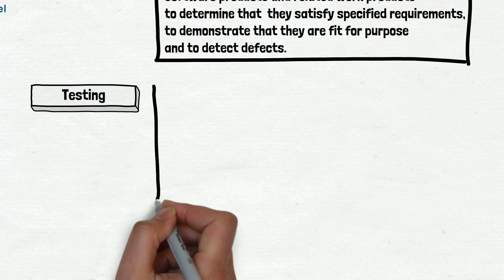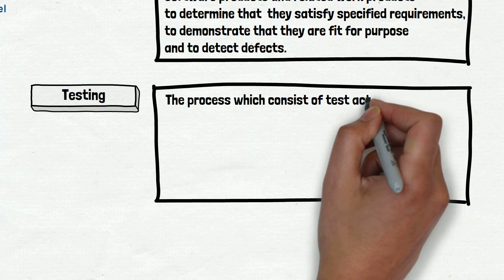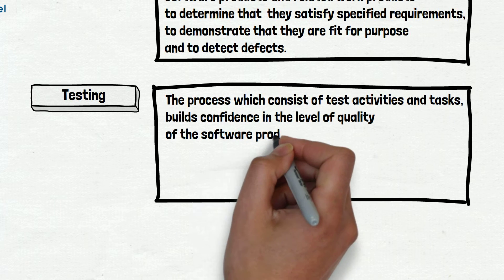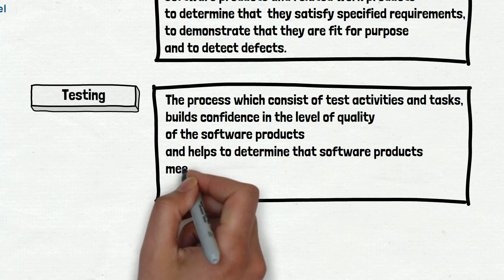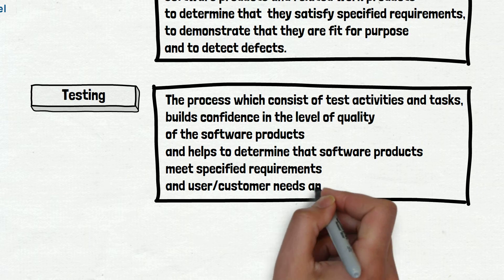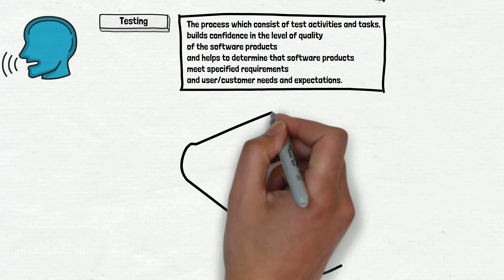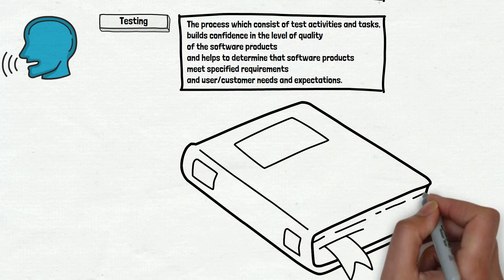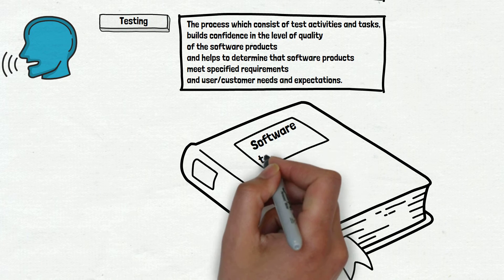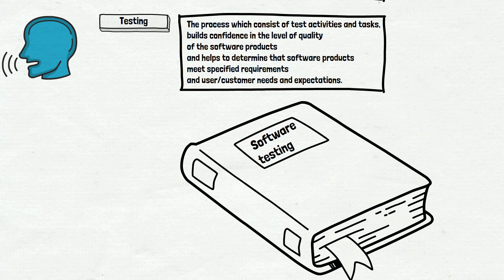The definition sounds like this. Testing: the process which consists of test activities and tasks, builds confidence in the level of quality of the software products, and helps to determine the software products meet specified requirements and user/customer needs and expectations. It is still very theoretical and sounds complex, because it's like saying everything you know about testing in one sentence. As a result, you have this theoretical answer which has nothing related to real life.